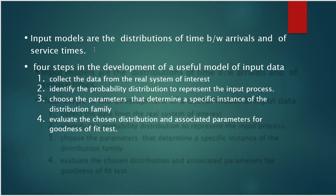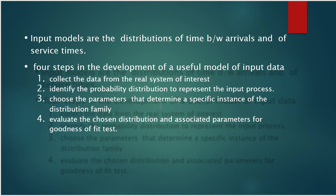There are basically four steps in the development of a useful model of the input data. These four steps are very important and throughout the chapter we are going to study just these four steps. Step one is collect the data from the real system of interest. Step two is identify the probability distribution to represent the input process. Step three is choose the parameter that determines a specific instance of the distribution family. Step four is evaluate the chosen distribution and associated parameter for the goodness of fit test.